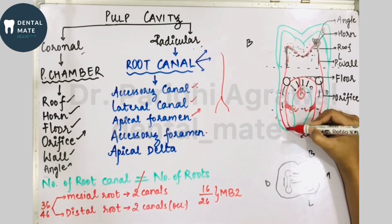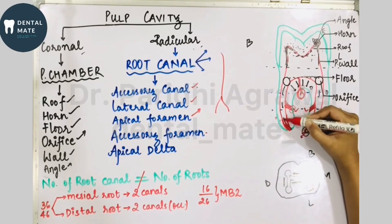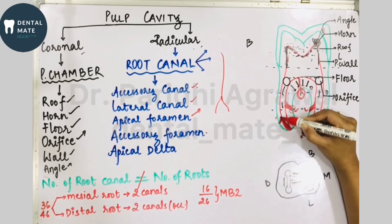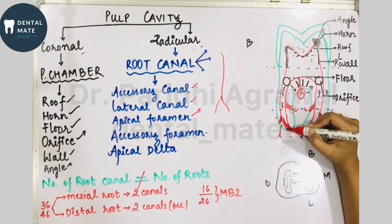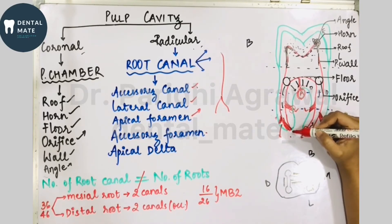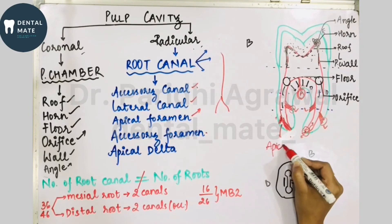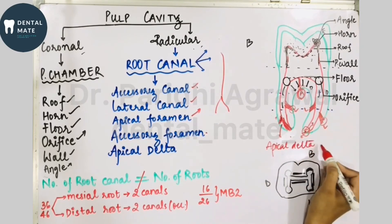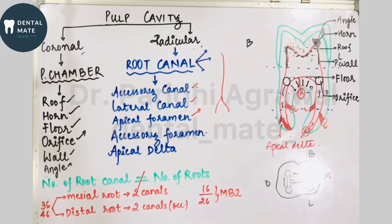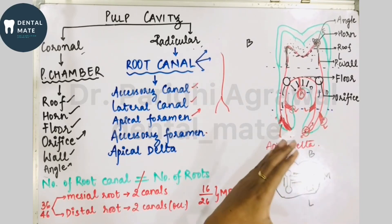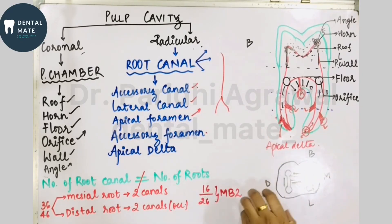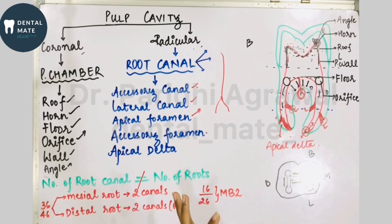The apical delta is the area between the lateral canal at the apex and the apical or accessory foramen. Root canal curvature can vary — it could be straight, curved only at the apex, or completely curved. Various types of curvatures are seen in root canals, classified according to the shape or curvature of the root.